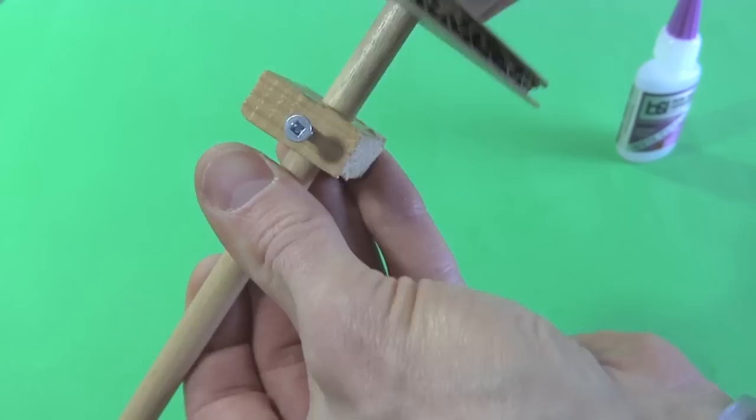Next I drill some holes for screws and screw them in. Finally I glue the bushing to the pulley. Quick test shows that it all fits together well.